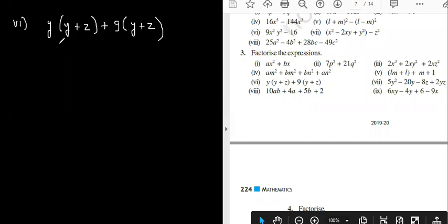So, in this sixth part, already factors are given as you just said. Both the brackets are same. So, taking y plus z common, and from the first term, I get y common. Y remaining basically, plus, and in the second term, I get nine remaining.